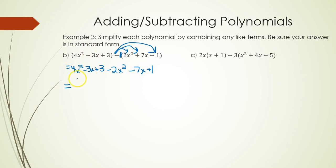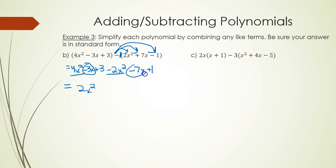Combining like terms for part b: 4x squared minus 2x squared is 2x squared, minus 3x minus 7x is minus 10x, and 3 plus 1 is plus 4. The answer is 2x squared minus 10x plus 4.